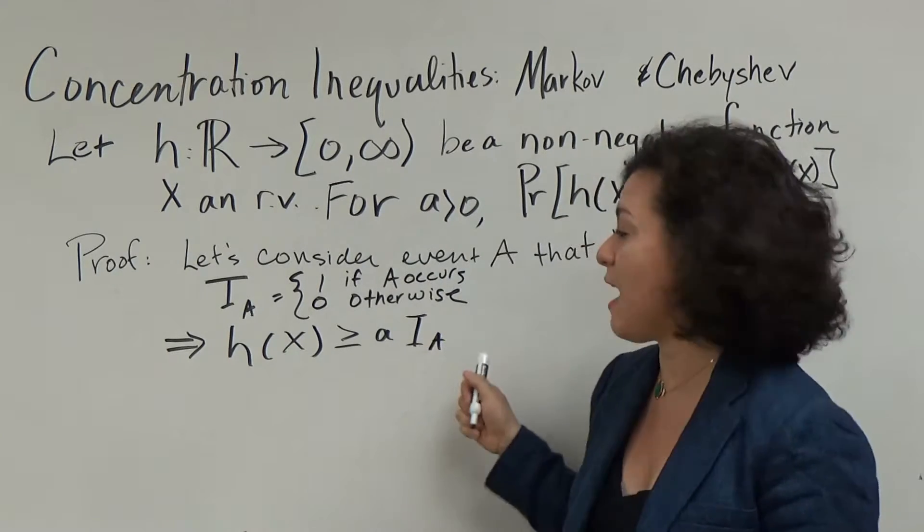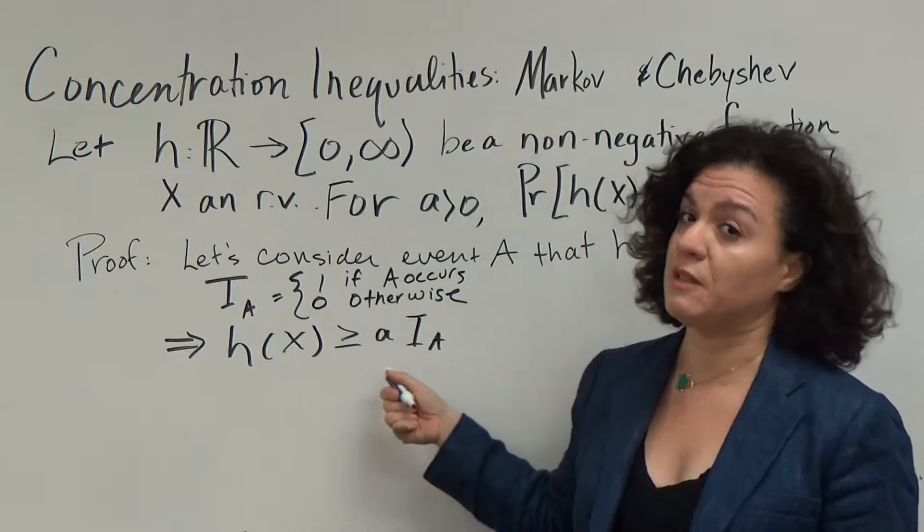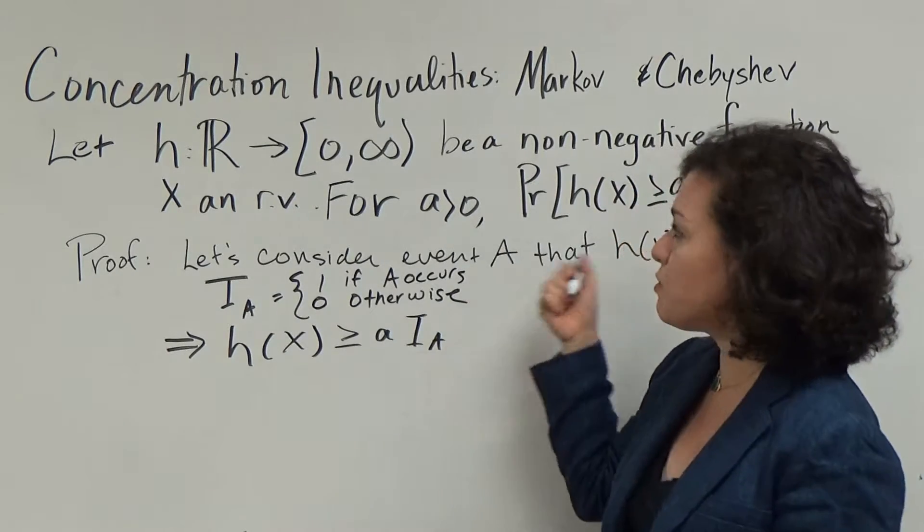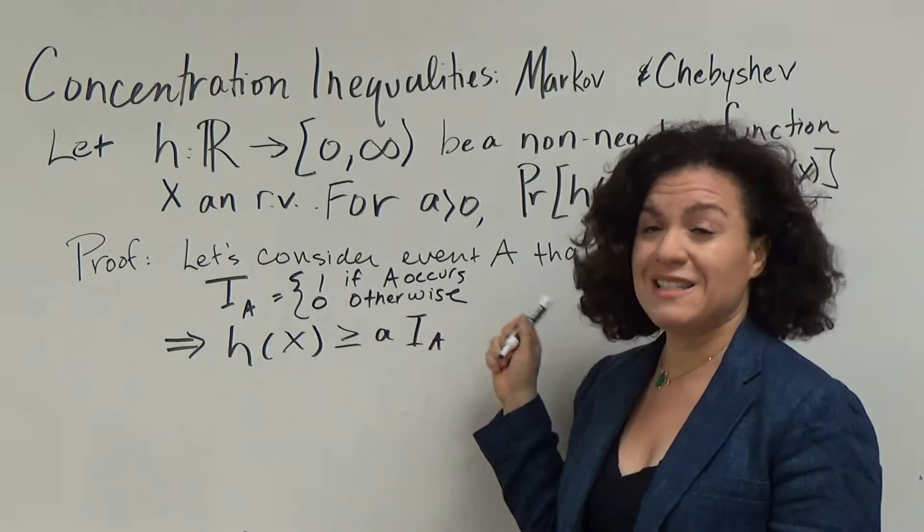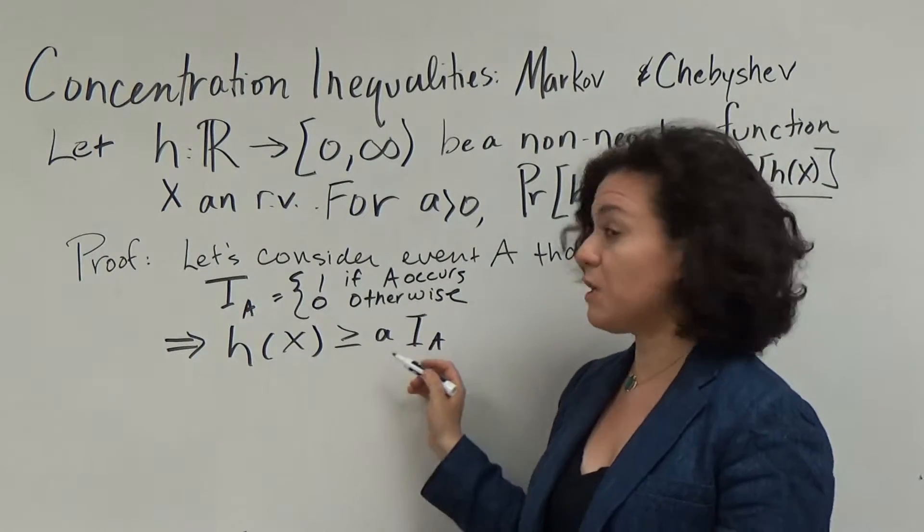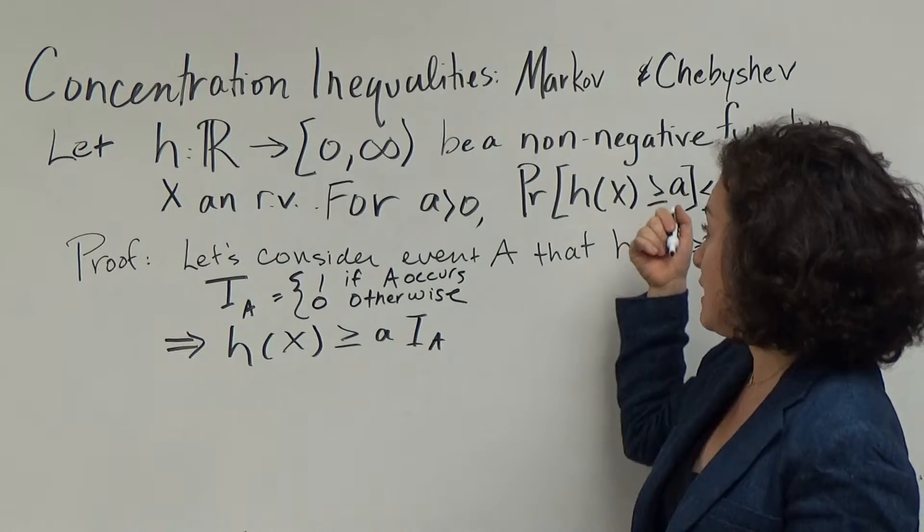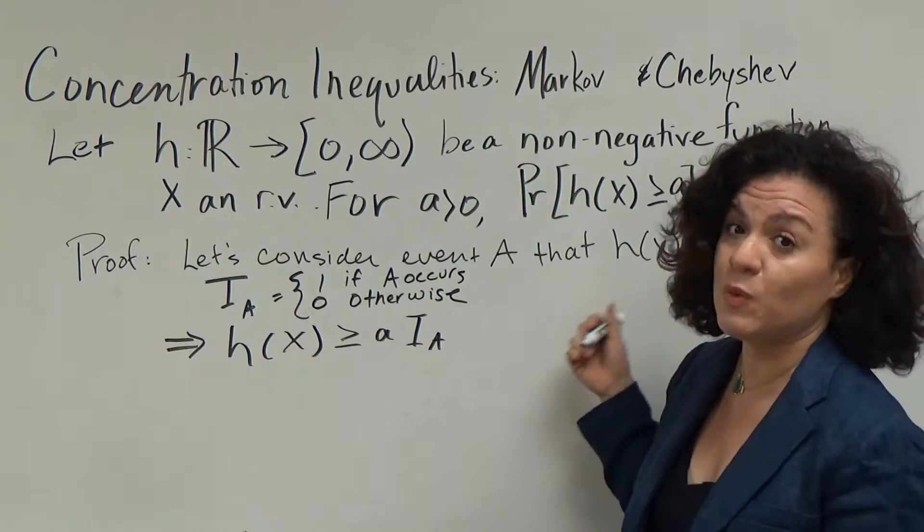So if the event A doesn't happen, the indicator will be 0 and h(x) will be greater than or equal to 0. This is true because h is non-negative. Now, if the event A does happen, then h(x) will be greater than or equal to a. And that's simply the event A that we defined.